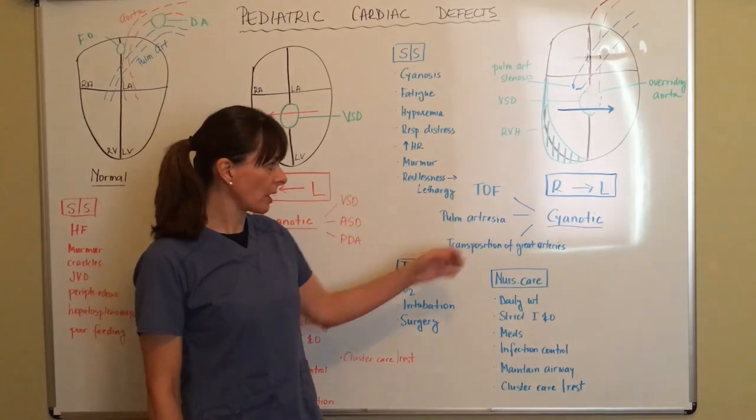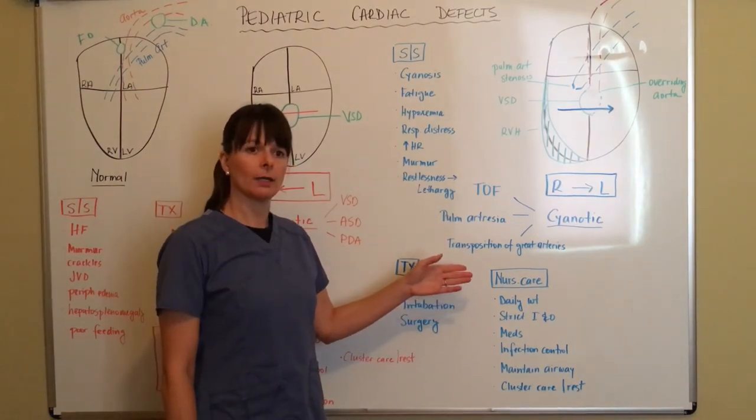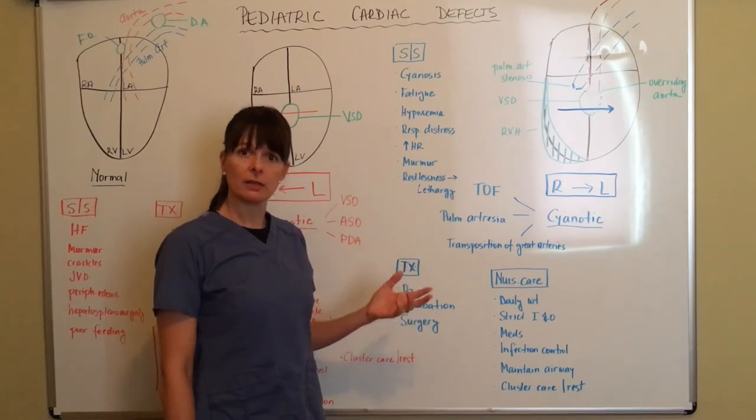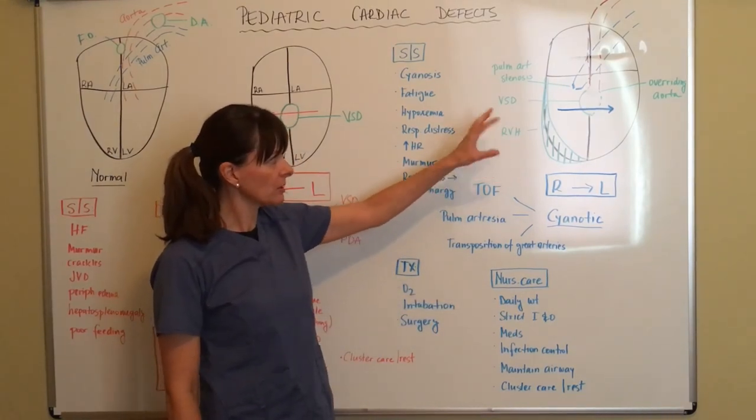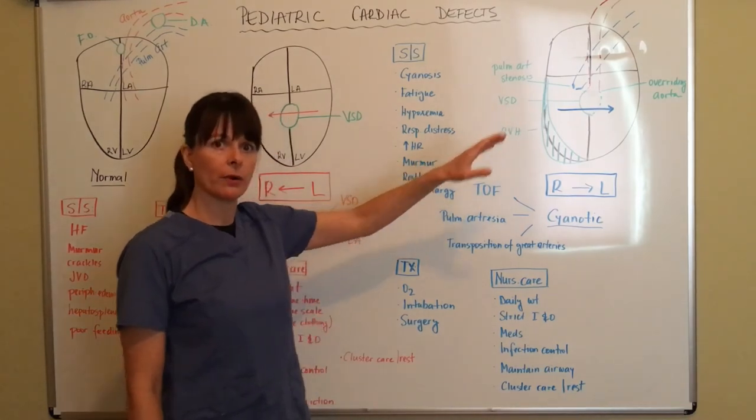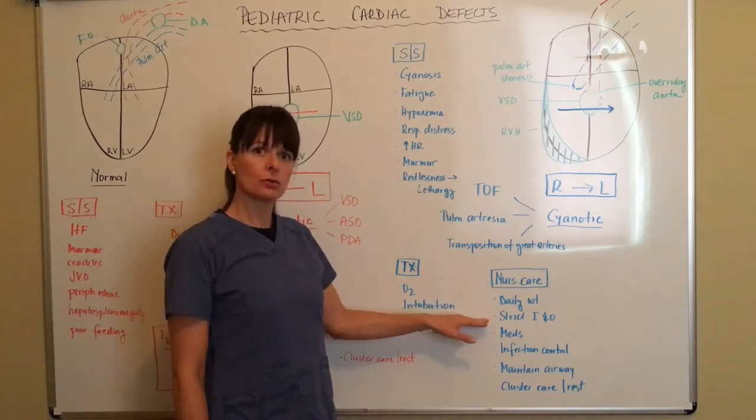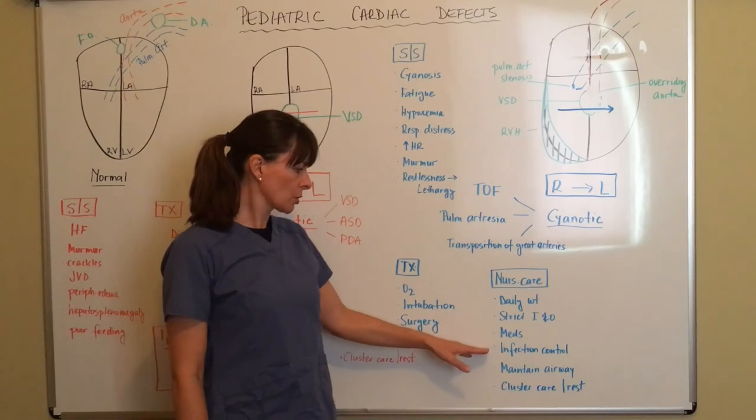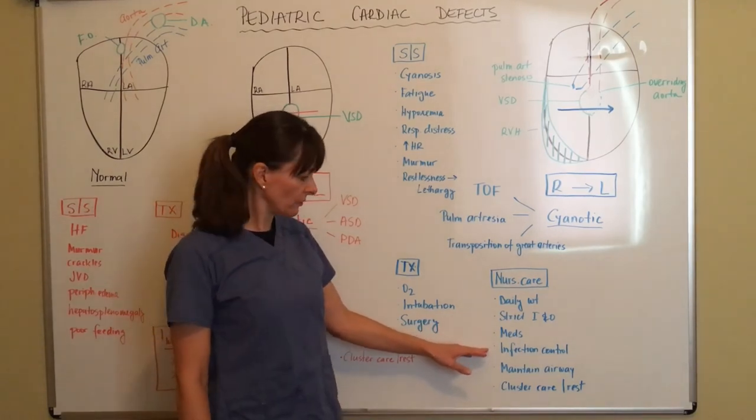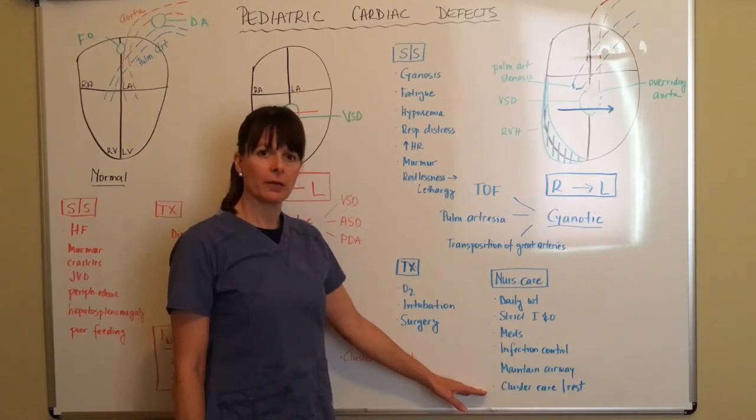Now nursing care for cyanotic defects includes again daily weight because we want to make sure these kids don't really retain fluid but they might have very poor weight gain because they are so restless and all their energy goes into breathing so we need to monitor that. But again they could also go into heart failure because of all these different structural defects that we have going on. So daily weight is a must on any of these children with cardiac defects again same time same scale same clothing. Strict ins and outs for fluid retention purposes, medications that they might need in addition to intubation and oxygen, certainly again infection control like we discussed for acyanotic defects. Maintaining the airway absolutely a necessity and again clustering care and allowing for periods of rest.